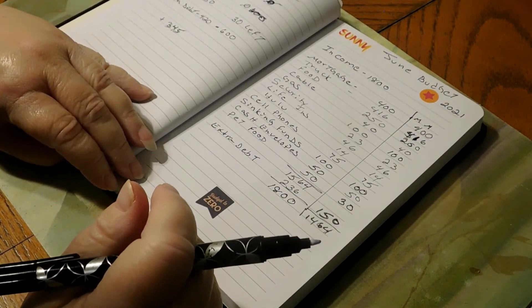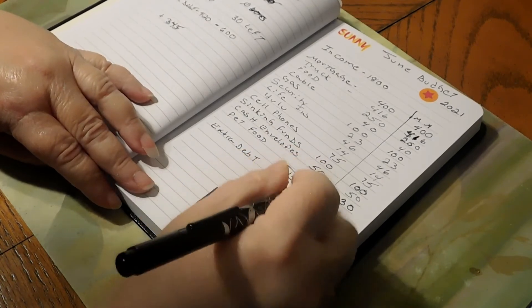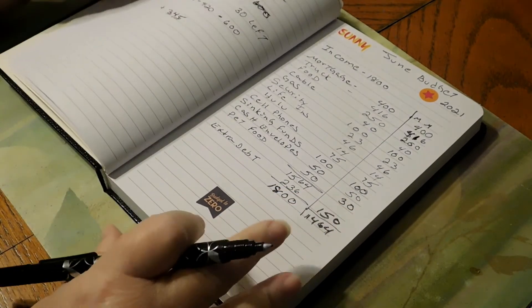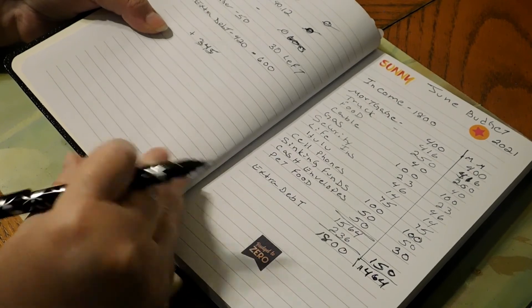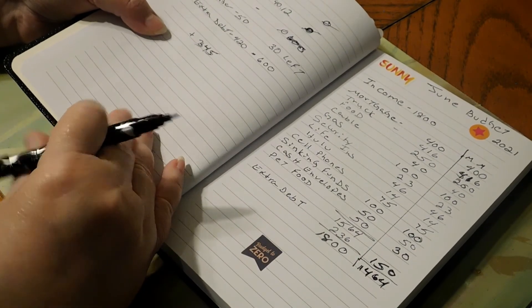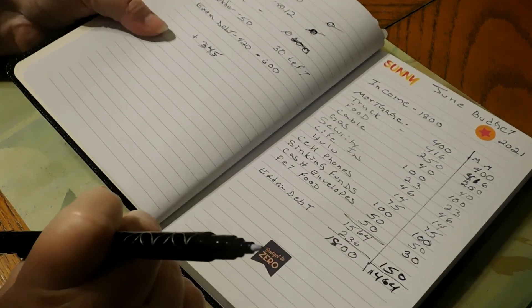But not doing too bad. We still have $336 and we've got two weeks left in the month of June, so hopefully that $336 will help out. But we shall see. This is a short video. I just wanted to see how we were mid-month of June so far, and we're not looking too bad.